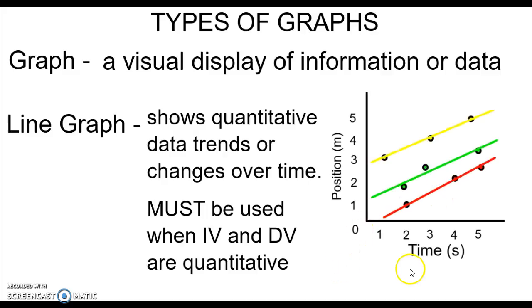So here's an example of a line graph. See how we have numbers. It counts by something on either axis. Time and position are both measured with numbers. And this is actually a multi-line graph. You will do one of these at least this year in our class. It must be used when you have two sets of quantitative data.